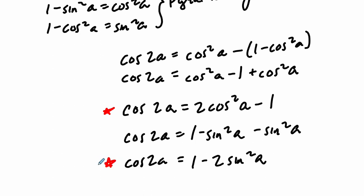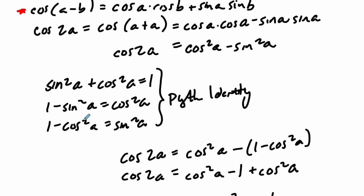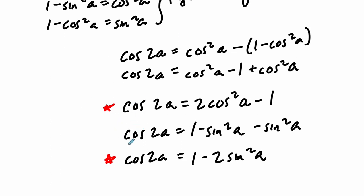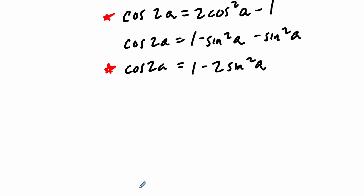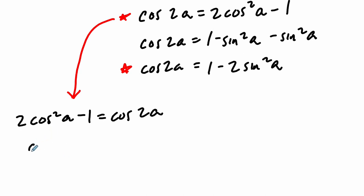We can keep going with all of these. So we have our addition formulas, our difference formulas, the double angle formula for sine, and using the addition formula combined with the Pythagorean identity, the double angle formulas for cosine. We can go further by isolating these formulas. Starting with 2 cosine squared A minus 1 equals cosine of 2A, we add 1 and divide by 2 to get cosine squared A equals 1 plus cosine of 2A over 2. Taking the square root of both sides gives us the half-angle formula.